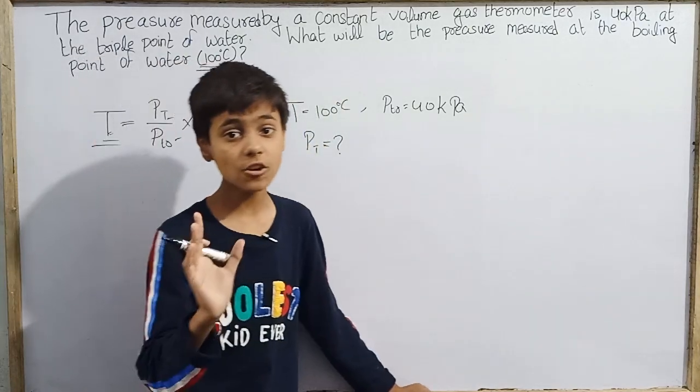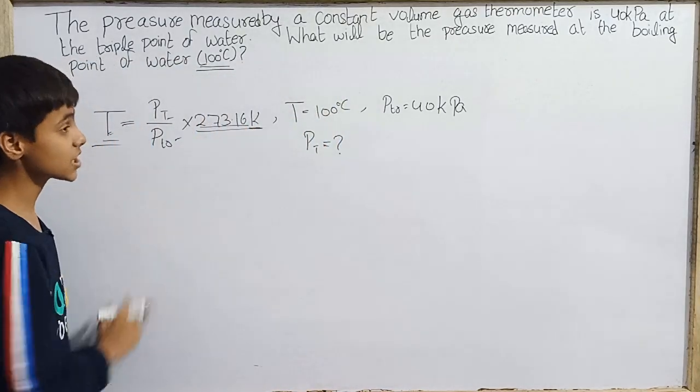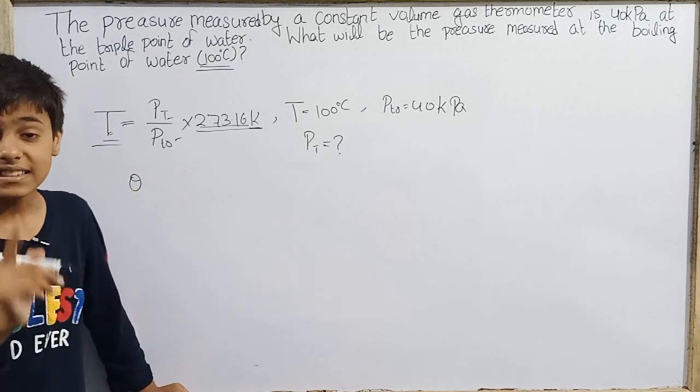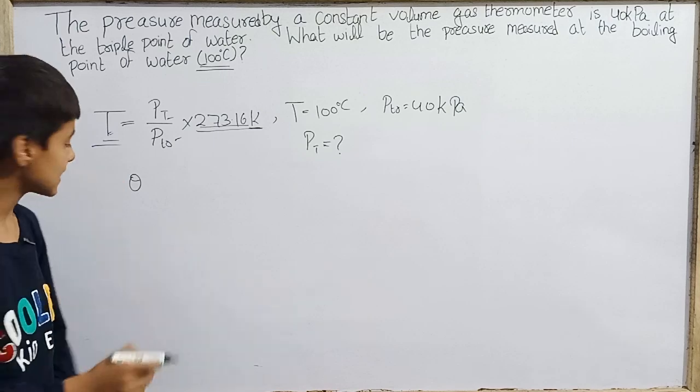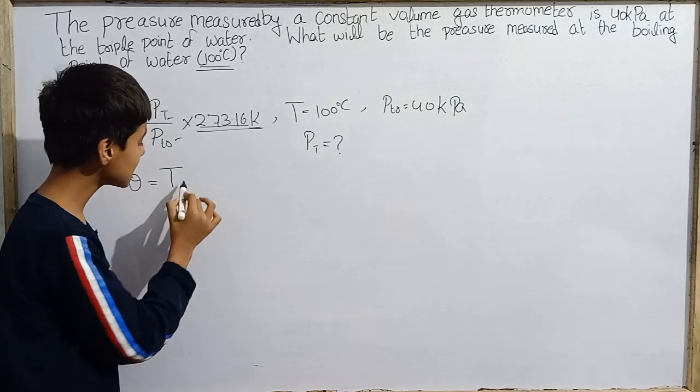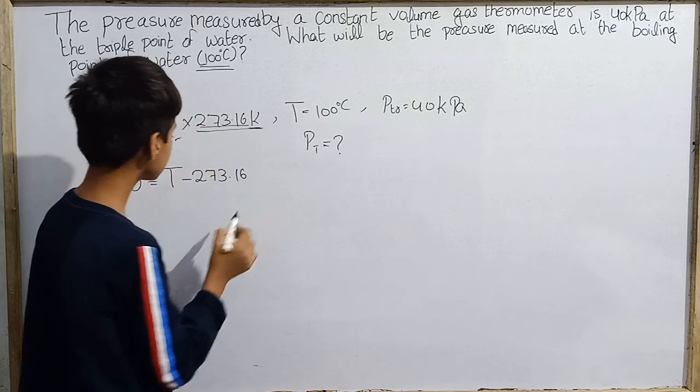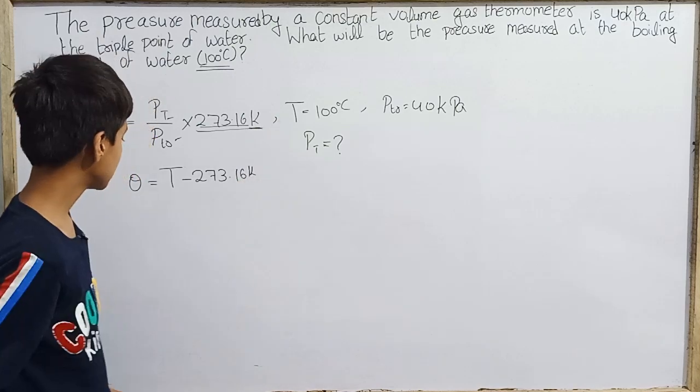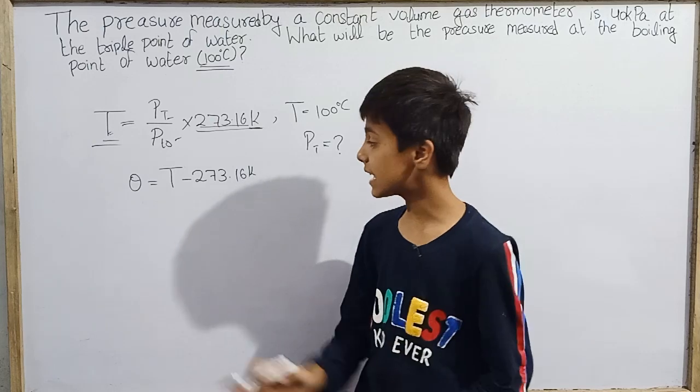And if you read Concepts of Physics by H.C. Verma sir, there is a very good equation given there. That is theta, they have supposed to be theta, that is the temperature in degrees Celsius. What is temperature in degrees Celsius? That is temperature in Kelvin minus 273.16. This is in Kelvin.